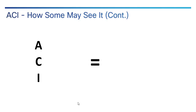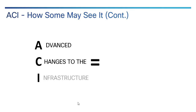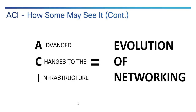But really, ACI is advanced changes to the infrastructure. It's not just a new technology; it's a paradigm shift in a lot of ways. It represents the evolution of networking, specifically in the data center. And since it's been around for five, six-plus years now, it's here to stay.